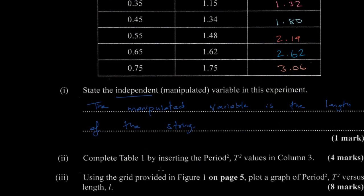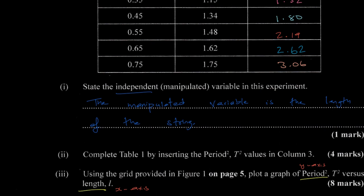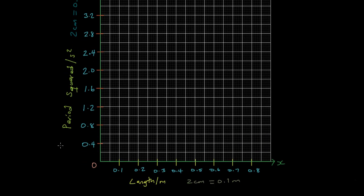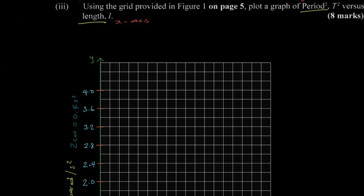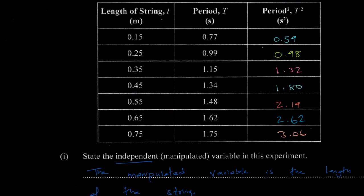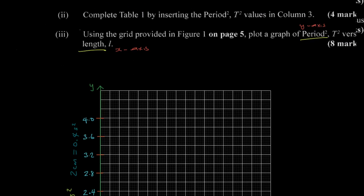Next, using the grid paper provided, we're to plot a graph of period squared versus length. Period squared goes on the y-axis and length on the x-axis, since whatever appears first in the statement goes on the y-axis. On the x-axis we're using 2 cm to 0.1, and on the y-axis 2 cm to 0.4. The axes are labelled with quantity, unit, and scale.